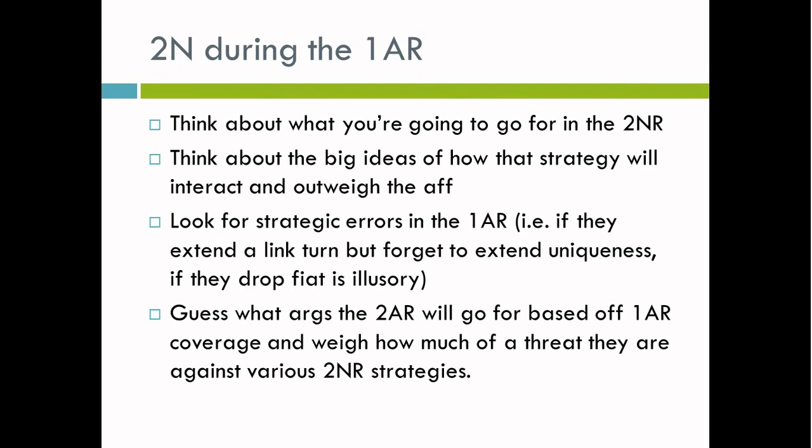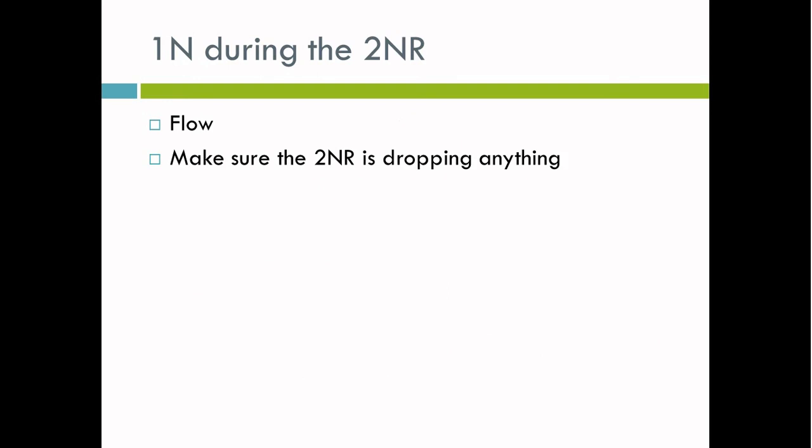The 2N during the 1AR should be thinking about what you're going to go for in the 2NR and the big ideas about how that strategy will interact with and outweigh the aff. Look for strategic errors in the 1AR — for example, if they extend a link turn but forget to extend uniqueness, or drop a DA. Guess what arguments the 2AR will go for based on 1AR coverage — how much time the 1AR spends on specific arguments — and weigh how much of a threat they'll be against various 2NR strategies. If the 1AR invests a lot of time on the counter plan permutation and you think you're probably losing the perm, think about whether you even want to go for the counter plan and how you'd manage the permutation debate in the 2NR.